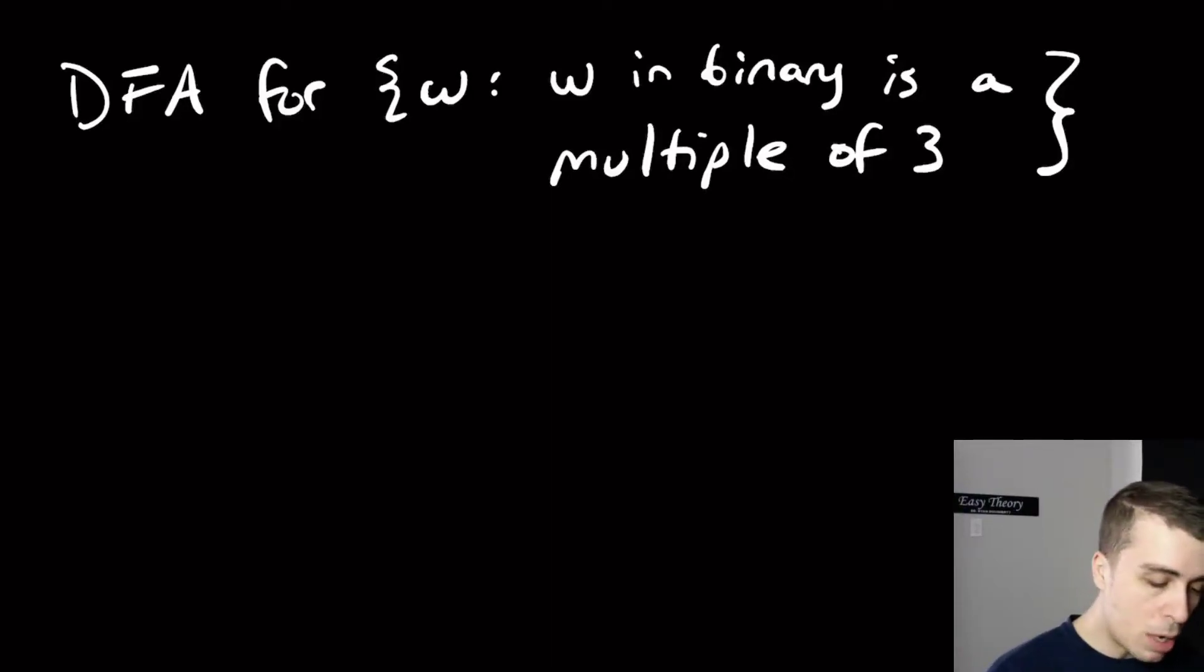Hi, so let's make a quick video on a DFA for all binary strings that is a multiple of 3. So it's not like a multiple of 2 where it just ends in a 0.